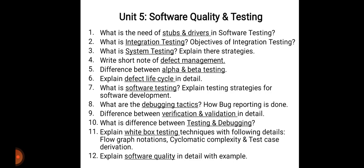Write a short note on defect management. Then the difference between alpha and beta testing — mention five to six differences with example, generally asked for six to eight marks. Most importantly, explain the defect life cycle in detail — draw the defect life cycle and explain it point-wise from start to end. Also explain testing strategies for software development, debugging tactics and bug reporting, and the difference between verification and validation — prepare both differences for exam.